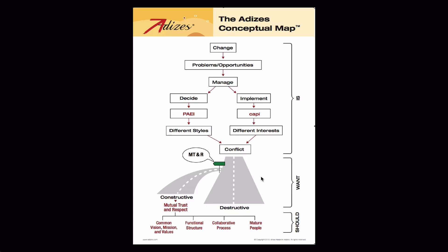Every word and arrow and symbol on this map has a meaning, and you could expand on any one of these terms and find a chapter in a book or one of the top-level videos that explains just one arrow. For example, we have a video called Accelerated Change, which talks about why there is change and why it's accelerating. There's another video about why change causes problems and opportunities. There's even a video for this arrow right here called Secret of Success. Every symbol on this map expands into a whole other section of knowledge, and this provides the overview.